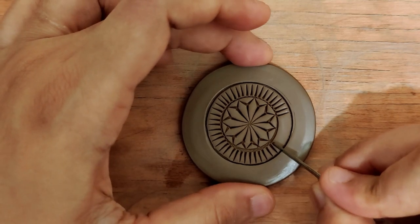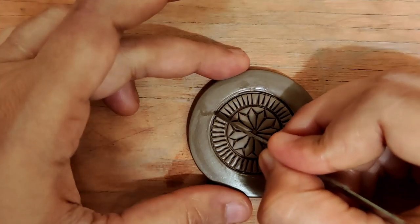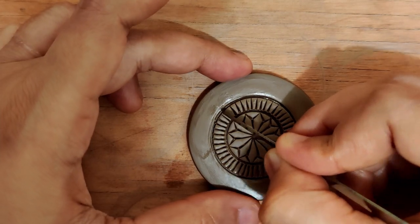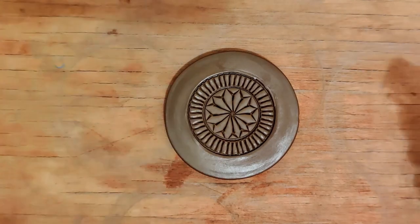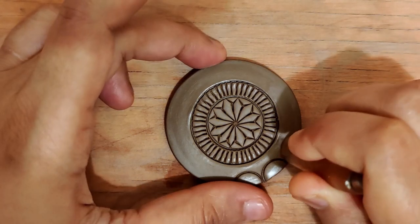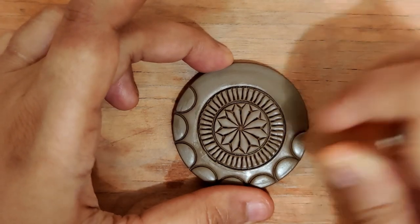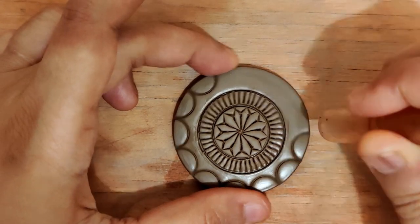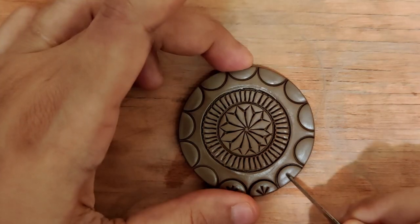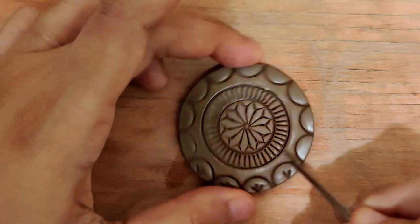Once again using my fettling knife, adding these lines in the second circle. Using an old pen cap, adding a semi-circular design along the edges, along the sides of the circle.